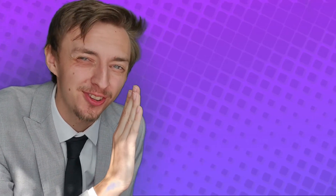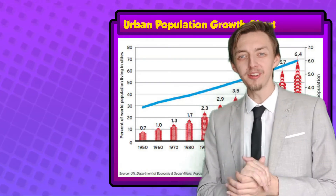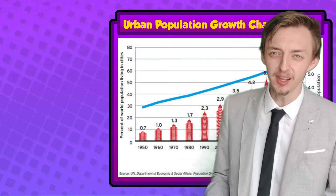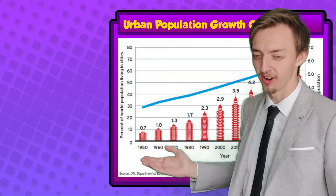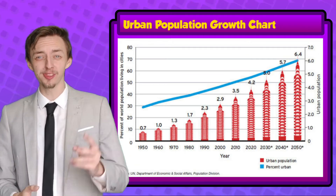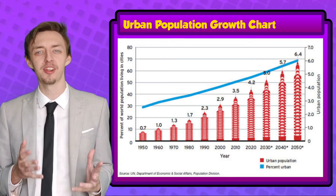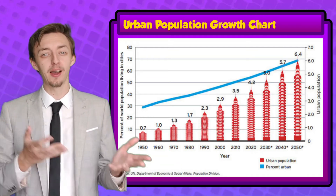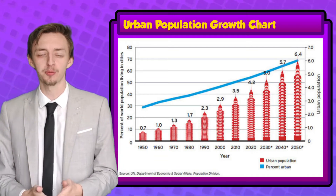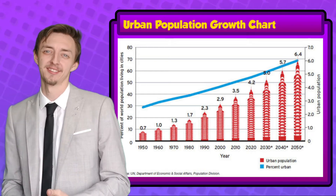Now let's move on to trends in urbanization — this is where you'll find out the answers to the starter questions. In 1950, one-third of the world's population lived within urban areas, and ever since then that number has been increasing. It's estimated that by 2050, two-thirds of the world's population will be living within urban areas, as opposed to 1950 when two-thirds lived within rural areas.